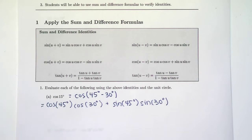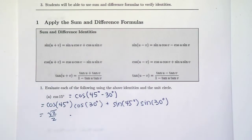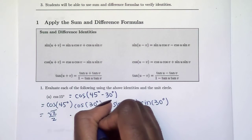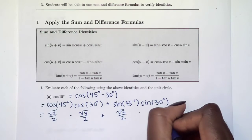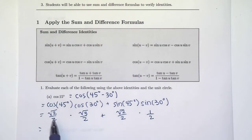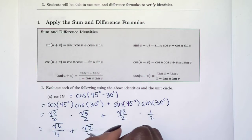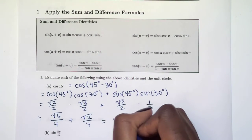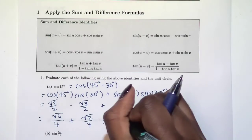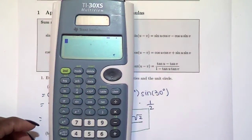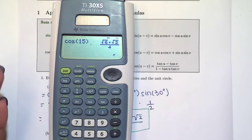We can use our unit circle — cosine of 45 degrees is root 2 over 2, cosine of 30 degrees is root 3 over 2, sine of 45 degrees is root 2 over 2, and sine of 30 degrees is 1 half. So we can multiply across: this gives us square root of 6 over 4 plus root 2 over 4. Luckily we have the same denominator, so this is root 6 plus root 2 over 4. So cosine of 15 degrees equals root 6 plus root 2 over 4. We can check our answer — in degree mode, cosine of 15 degrees is indeed root 6 plus root 2 over 4.